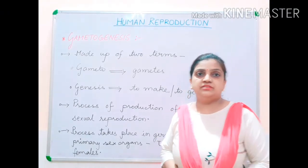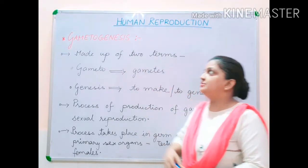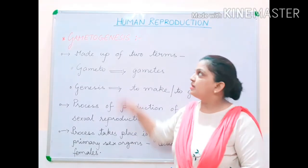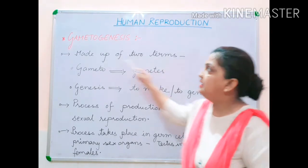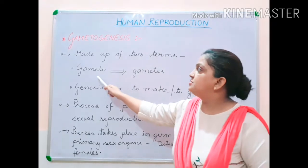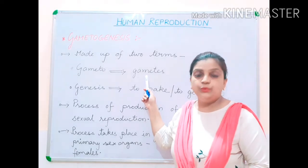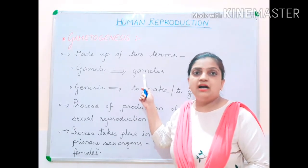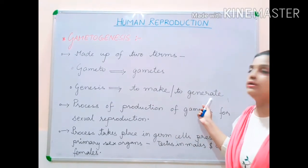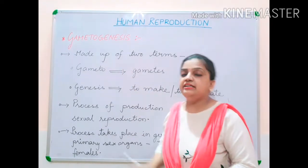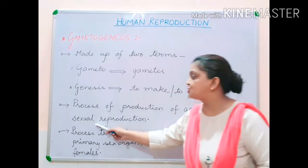Hello everyone, today I am going to discuss the next topic of human reproduction, that is gametogenesis. The term gametogenesis is made up of two words: gameto and genesis. Gameto means gametes, which has been derived from sex cells. Sperms or ovum are the sex cells. Genesis means to make or to generate. So we can define gametogenesis as the process of production of gametes for sexual reproduction.